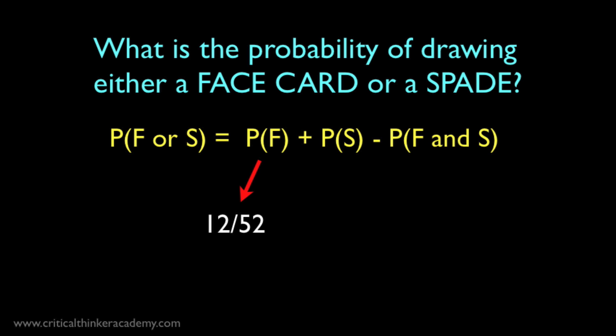With examples like these, you can just count the cards to get the probabilities. Let's start with the probability of drawing a face card. There are 3 cards per suit, and 4 suits, so that gives us 12 out of 52 cards that are face cards. The probability of drawing a spade is easy. There are 13 cards in a suit, so this is 13 out of 52. Now how many cards are there that are both face cards and spades? Well, just the jack, queen, and king of spades. So that's 3 out of 52.